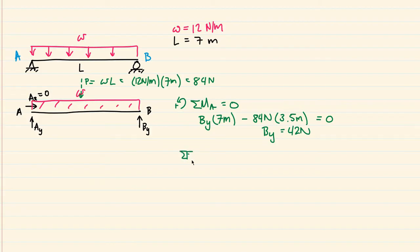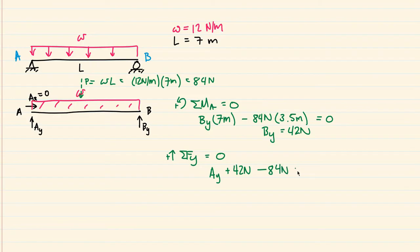Then we do the sum of forces in the Y direction equal to zero. We have positive AY going up, plus BY which is 42 newtons, minus P which is 84 newtons, equals zero. Solving gives AY equal to 42 newtons. That makes sense because this distributed load is uniformly distributed across the entire span, so our reactions should be the same — 42 and 42.